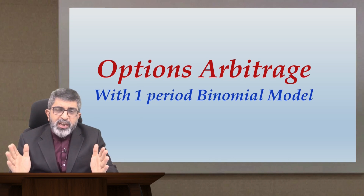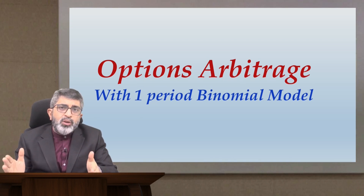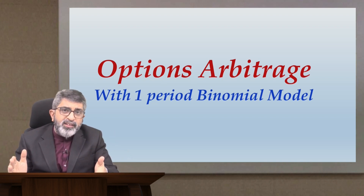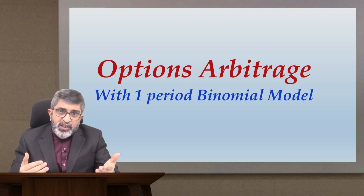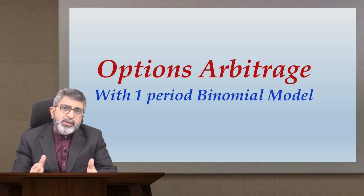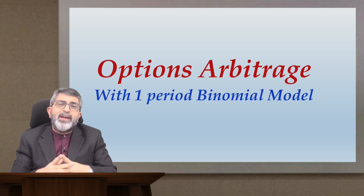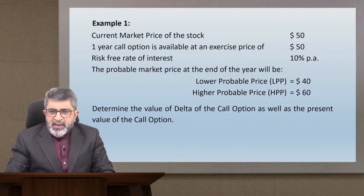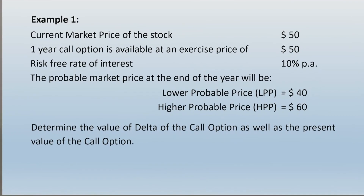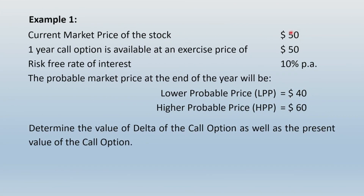Let's break this discussion into two components. First we will talk about the Delta of an option and how it is associated with the valuation of an option. Let's begin with Example 1 straight away. The current market price of the stock is $50, a one-year call option is available at an exercise price of $50. The risk-free rate of interest is 10% per annum. In the absence of any specific information we will consider annual compounding because the period is one year.